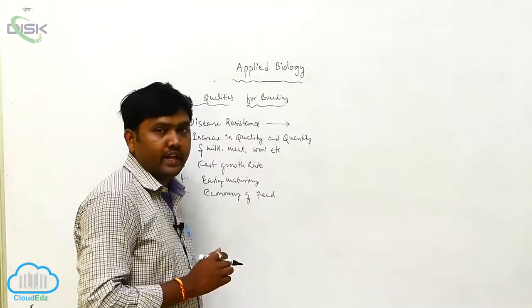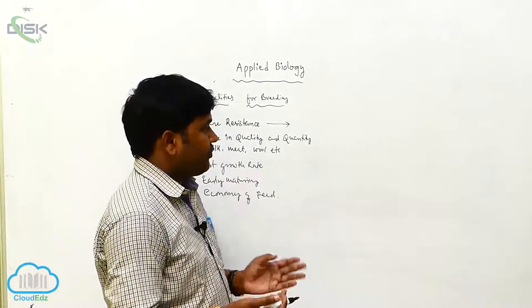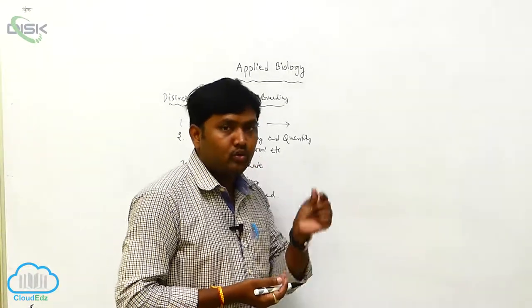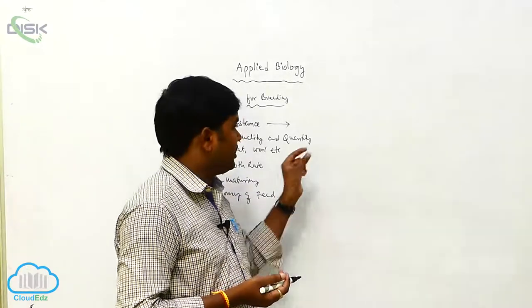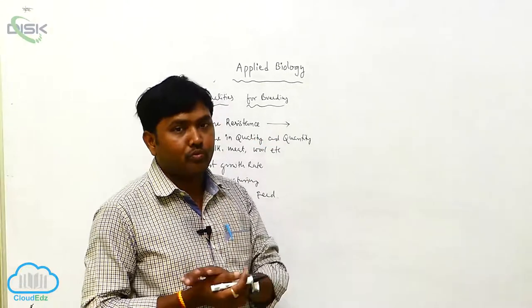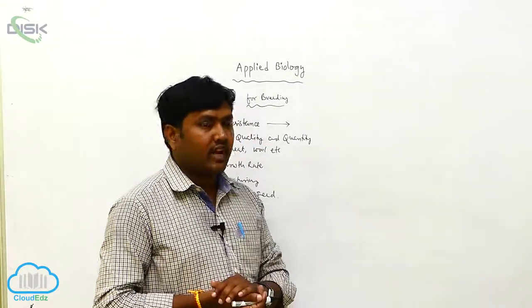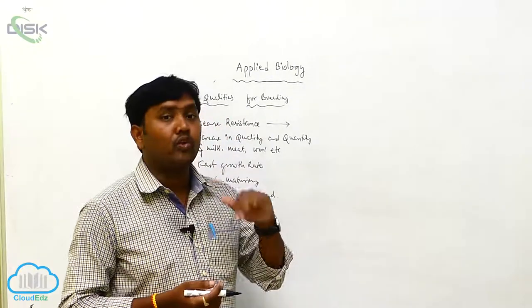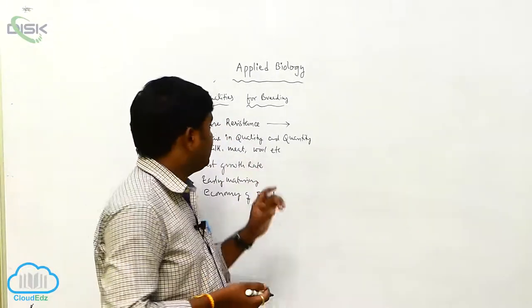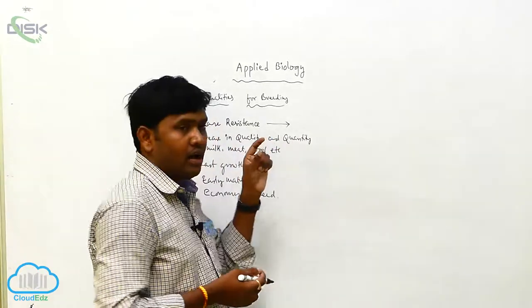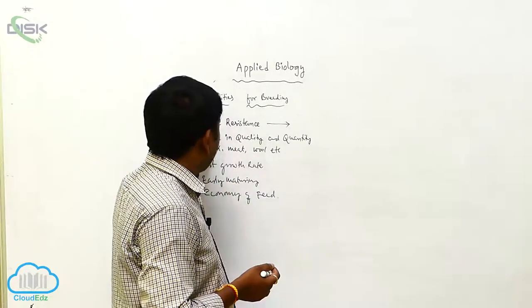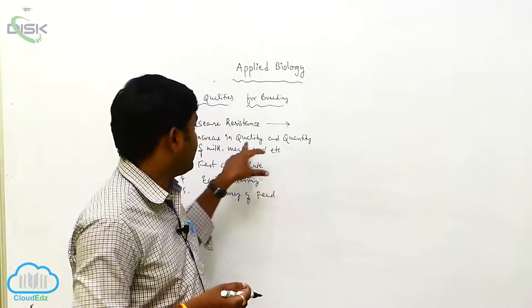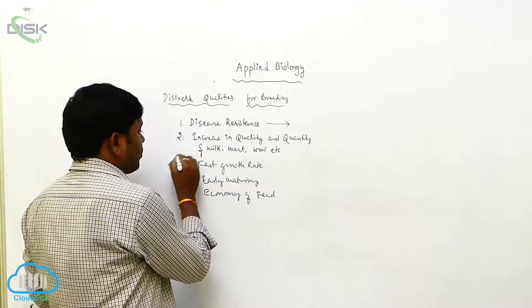Increase in quality and quantity of milk, meat, wool, etc. — for example, if the parent cow gives only two liters of milk, the bred animal should give more than two liters. That is the quality improvement. So the farmer must place importance on that quality or quantity.